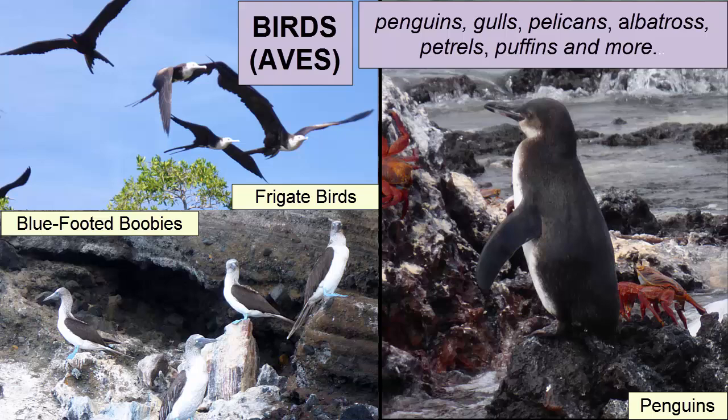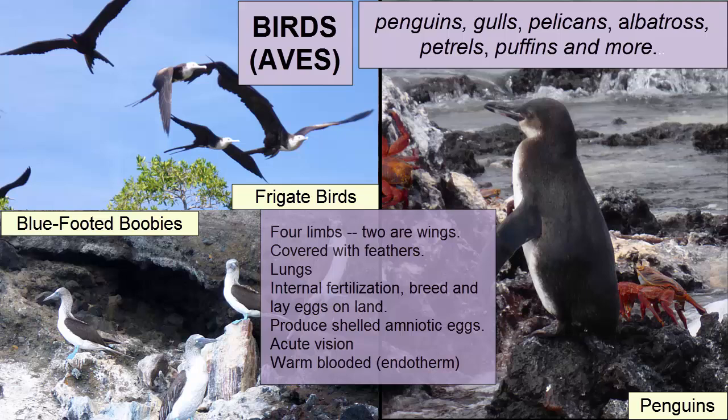Class Aves, or birds, consists of four-limbed chordates with feathers; four limbs are modified as wings. Gas exchange also happens through lungs; they have internal fertilization, breed on land, and lay shelled amniotic eggs on land. They have acute vision and are warm-blooded. Marine birds include penguins, gulls, pelicans, albatross, petrels, puffins, and many more.